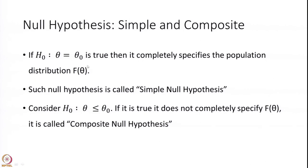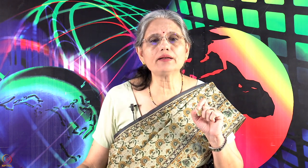There are two kinds of null hypothesis. If the null hypothesis says that theta equals theta-naught, it completely specifies the population distribution — we know what the population behaves like. So if the null hypothesis is true and it completely specifies the population, it is called a simple null hypothesis. While if the null hypothesis says that, for example, the yield strength is at most so much — meaning theta is less than or equal to theta-naught — then this does not completely specify the distribution or the population, and therefore it is called a composite null hypothesis.